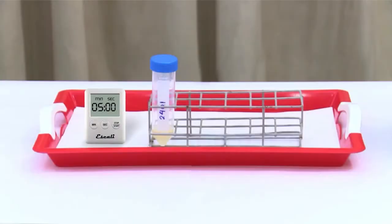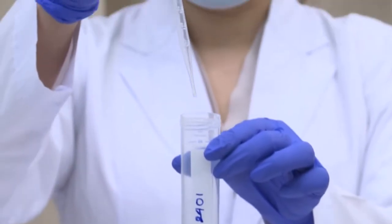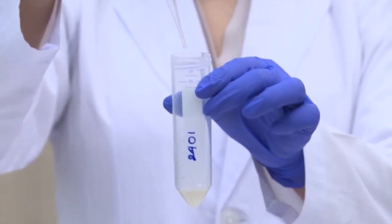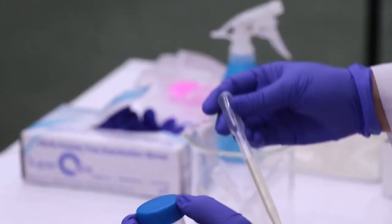Label the Xpert MTB-RIF test cartridge with the sample ID by writing on the left or right side of the cartridge. Using the sterile transfer pipette provided with the kit, aspirate the liquified sample reagent mixture into the transfer pipette until the meniscus is above the minimum mark, at least 2 mL.